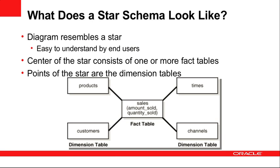It's far easier for an end user to understand this model because the majority of the information they want to know is already contained in the fact table. They just join out to the dimension tables to pick up additional attribute information, but the key information they need is in that single table, making it far easier for them to drive this data model even if they have less knowledge of the data.